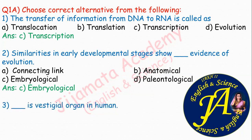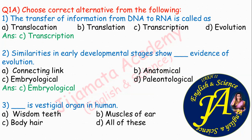Third question: dash is a vestigial organ in humans. Options are wisdom teeth, muscles of ear or ear pinna, body hair, and all of these. The correct answer is D, all of these — wisdom teeth, muscles of ear, and body hair are all vestigial in us, meaning they are useless to us.